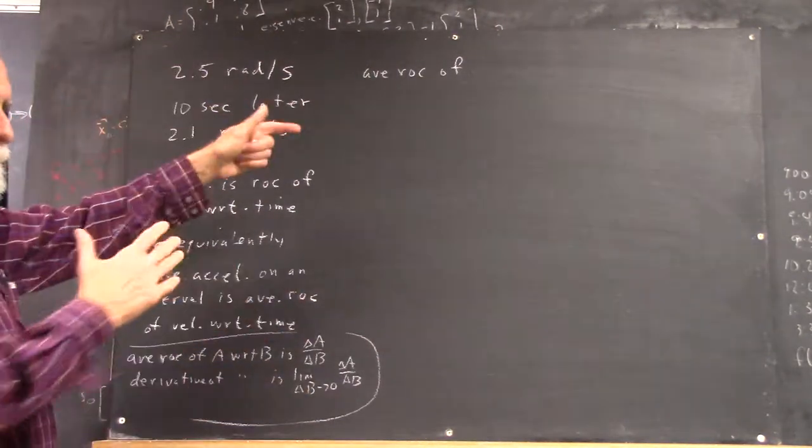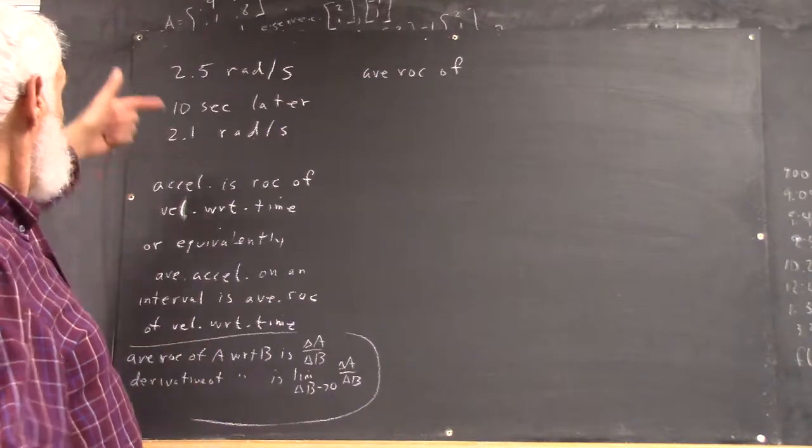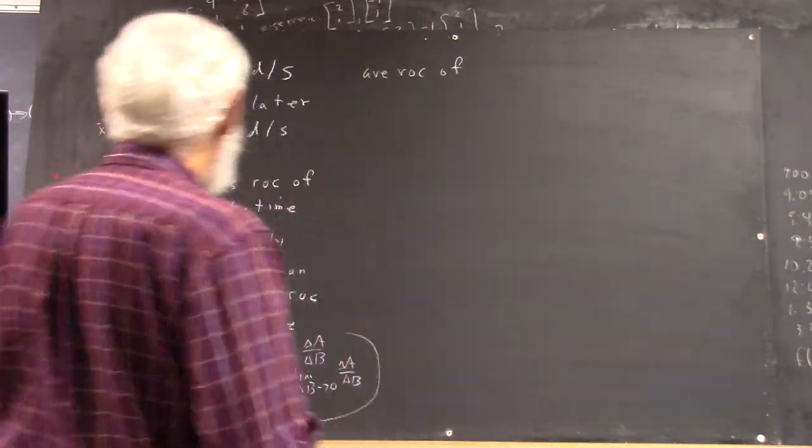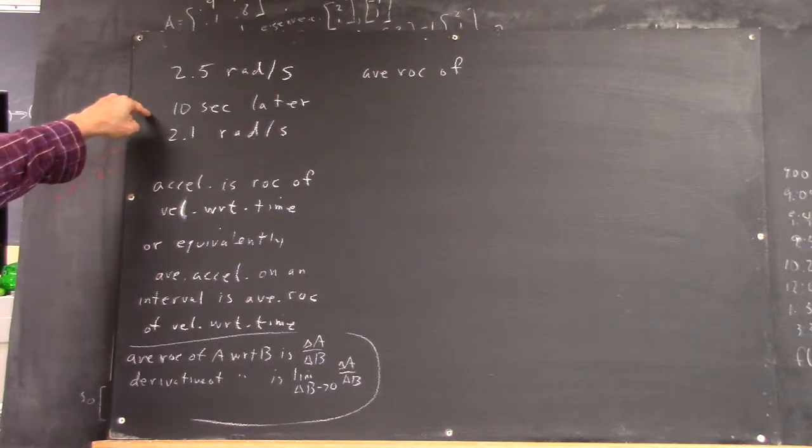Okay, so we have a rotating system that slows from 2.5 radians per second to 2.1 radians per second in 10 seconds, right?